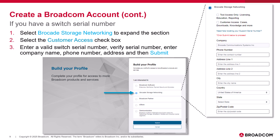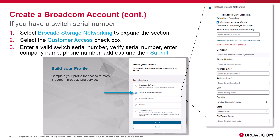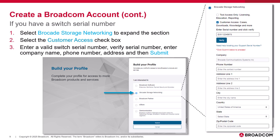If you do have a switched serial number, select the Customer Access checkbox. In addition to licensing, education, and reporting, this will also give you access to cases, downloads, the knowledge base, and more. Now enter a valid switched serial number and select Verify. After you have verified your serial number, enter your phone number, address, your company name, and then Submit.